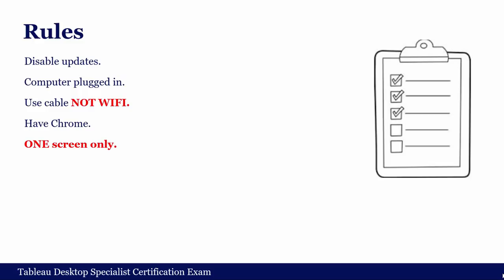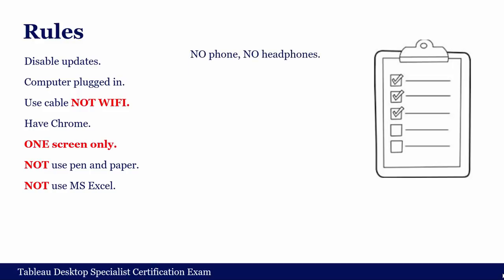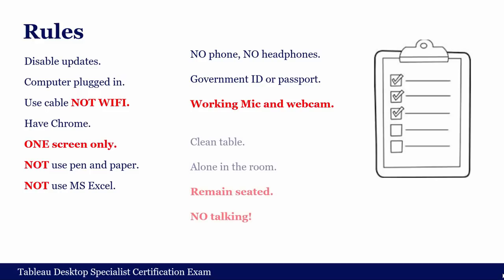You are not allowed to use pen and paper, Microsoft Excel, your phone, or headphones. You must have a government-issued photo ID or passport to prove your identity. Your microphone and webcam must be fully functional because they will record audio and video of you. Before starting, you will rotate your webcam 360 degrees to show your room — your table must be clean with only your computer, mouse, and ID. You must be alone in the room, remain seated, and you are not allowed to talk, even to yourself.